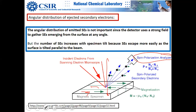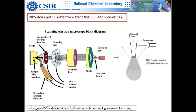Magnetism has a very strong influence on electrons, and you can easily analyze magnetic domains using spin-polarized electron detection in SEM.